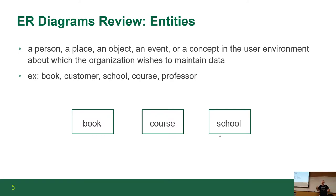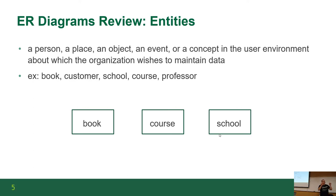As a reminder, an ER diagram is usually made up of entities and their relationships. An entity is a person, a place, an object, an event — some sort of concept in a user's environment that a given organization wants to maintain data about. Examples include book, customer, school, course, prof — that kind of thing. They're represented on an ER diagram by a box, a rectangle.